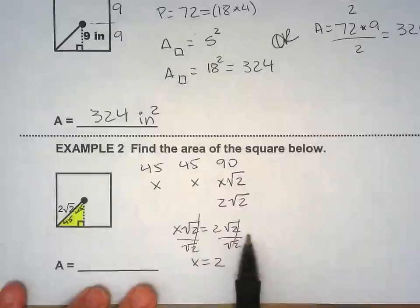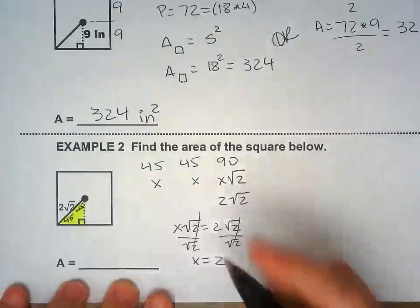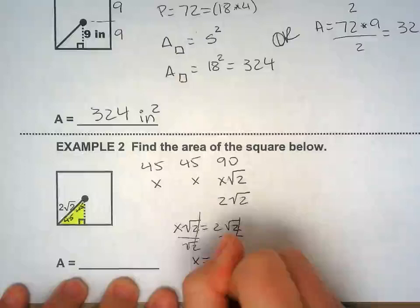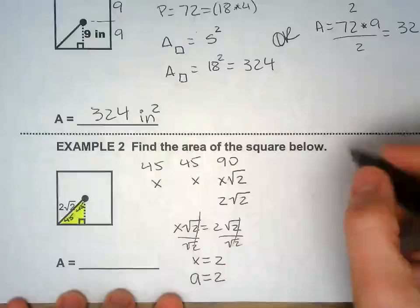So, you can actually go through the whole entire process of doing that. Or you can just look at it and go, oh yeah, x is 2. And that's the same as the apothem. That's why we did the whole thing. The apothem is 2.